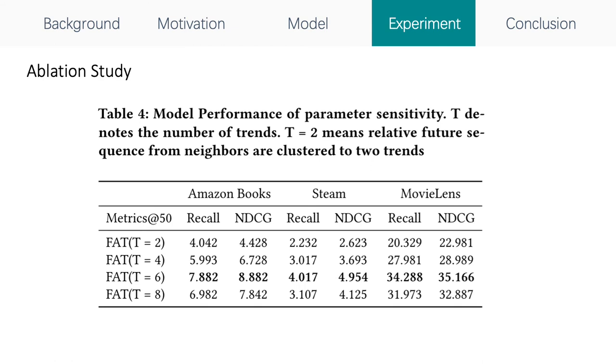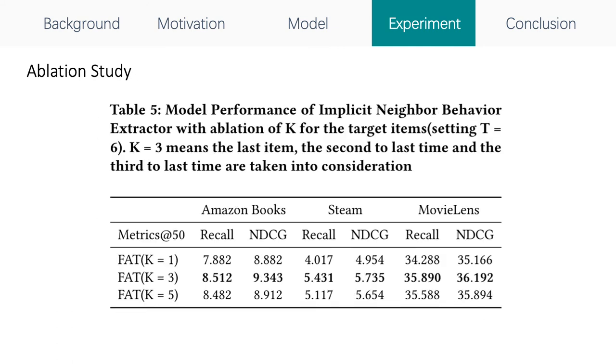This table reports the performance of our model FAT in different parameter settings by changing number of trends. We list the performance results from our model for the three datasets with different parameter settings. And this table compares the results of setting target item from the first to last item, the third to last item, and the fifth to last one. The largest improvements appear on increasing k from 1 to 3. This demonstrates that by adding the number of target items, our model can capture more trend information and be more powerful to predict future sequences.